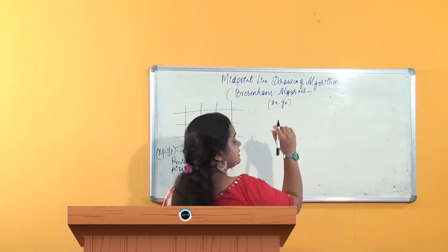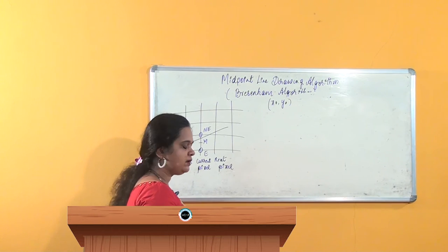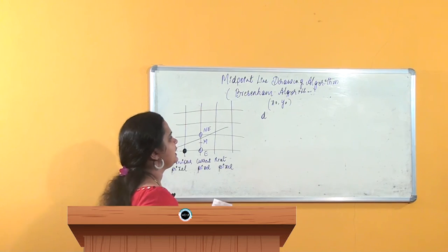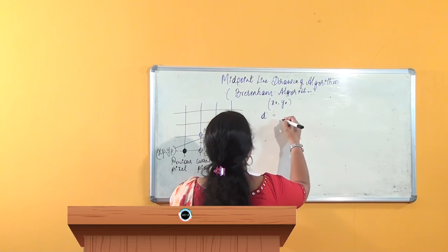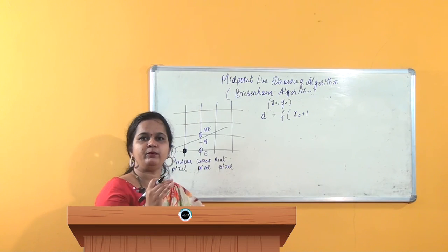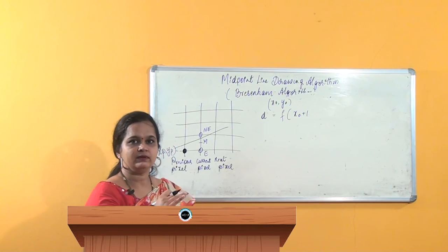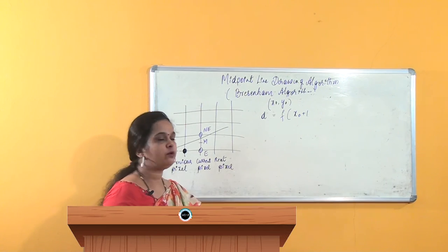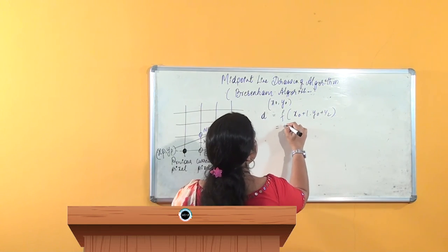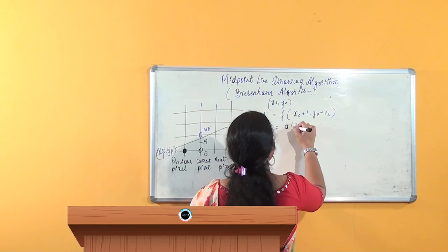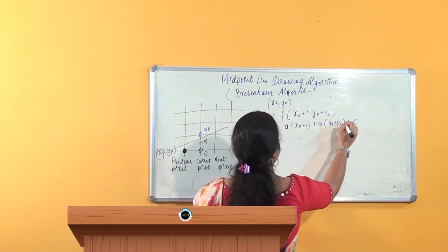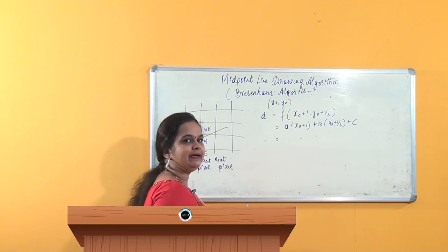The first pixel is (x0, y0) — this is the starting point of the line. The initial decision variable d is calculated at f(x0 + 1, y0 + 1/2), which is the midpoint for the first step. We have already seen that the first decision variable is at x_p + 1, so with initial point x0 we take x0 + 1 and y0 + 1/2. Substituting into the line equation: a(x0 + 1) + b(y0 + 1/2) + c.